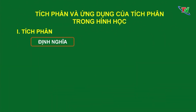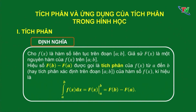Trước hết là định nghĩa của tích phân. Cho f(x) là hàm số liên tục trên đoạn [A,B]. Giả sử F(x) là một nguyên hàm của f(x) trên đoạn [A,B]. Thì khi đó, hiệu số F(B) trừ F(A) được gọi là tích phân của f(x) từ A đến B, hay được gọi là tích phân xác định trên đoạn [A,B] của hàm số f(x). Ký hiệu là tích phân từ A đến B của f(x) bằng F(x) thế cận từ A đến B, được định bởi hiệu số F(B) trừ F(A).